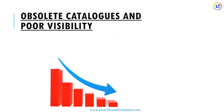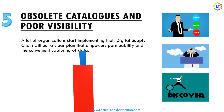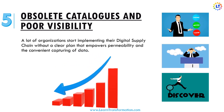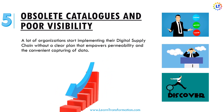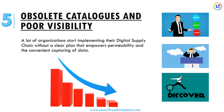Now let's look at the top five challenges to utilize digital tools in supply chain in your organization. Number five is obsolete catalogs and poor visibility. A lot of organizations start implementing their digital supply chain without a clear plan that enables visibility and the timely capturing of data. As a result, many organizations don't have a single global software catalog that is frequently refreshed with precise data — and this is particularly true for pricing data. It's important that pricing figures are accurate, accessible in numerous currencies, and simple to access.